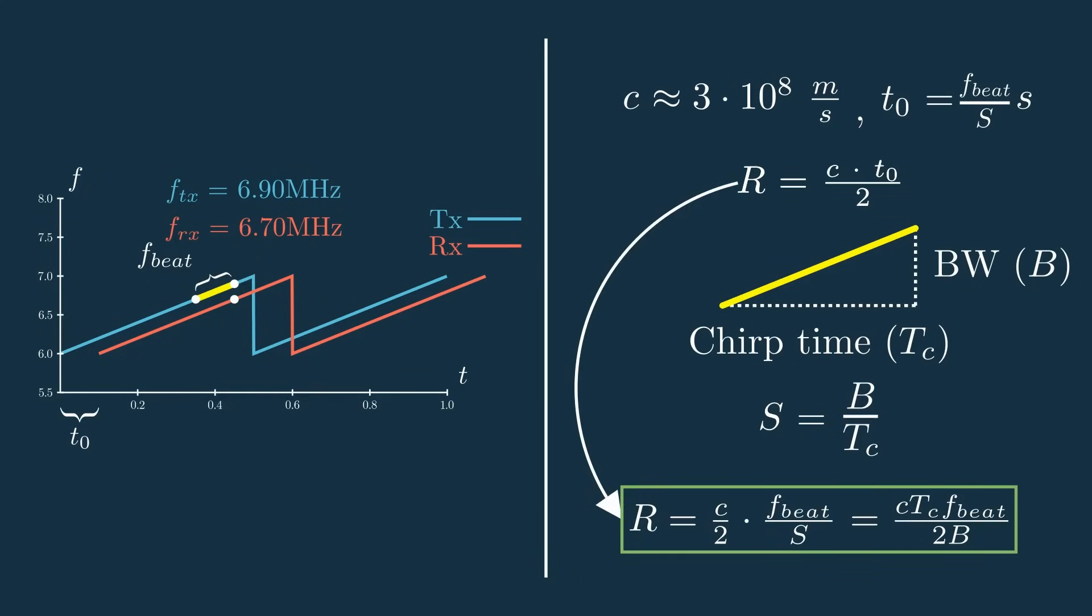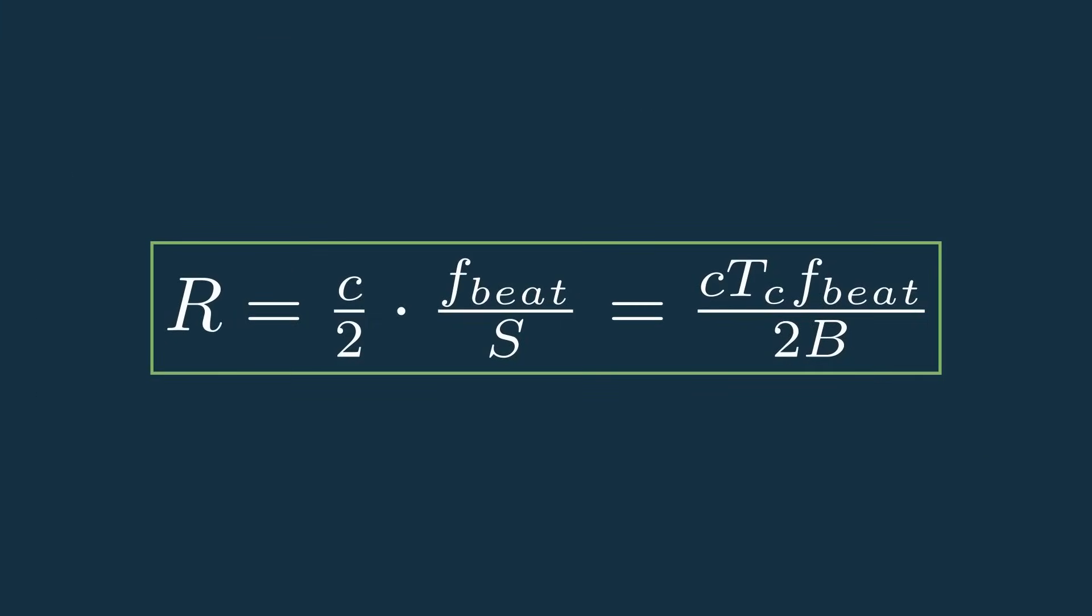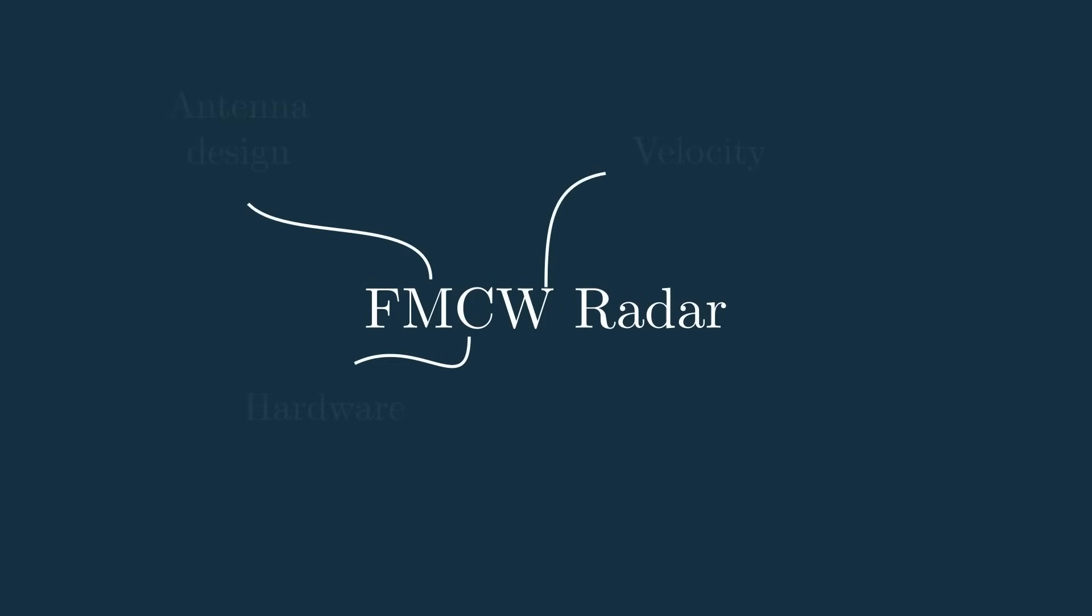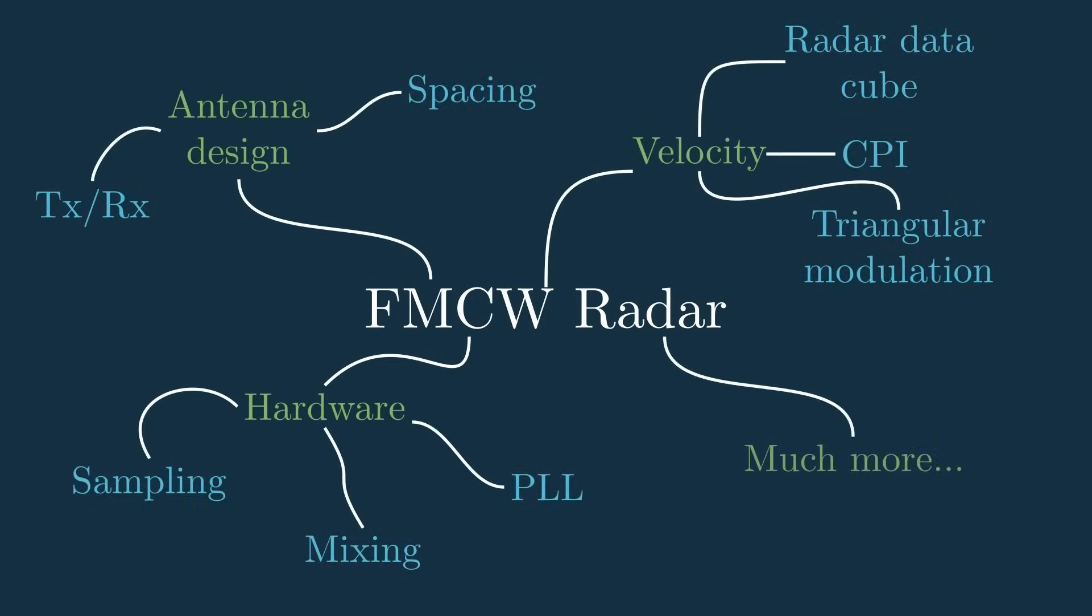And there you have it, that's the FMCW radar range equation. This right here is really the essence of FMCW radar, and it's cool that it really just breaks down into a few small and relatively simple equations. Now you should have a basic understanding of FMCW radar, but there is so much more beyond what this video covers, and the information here definitely has some caveats.